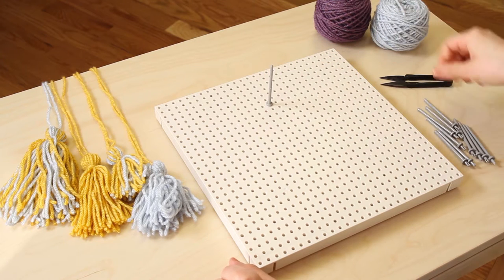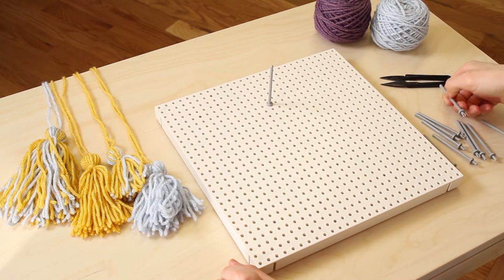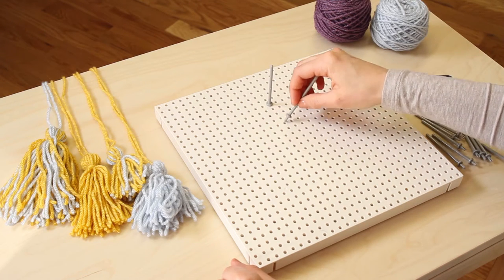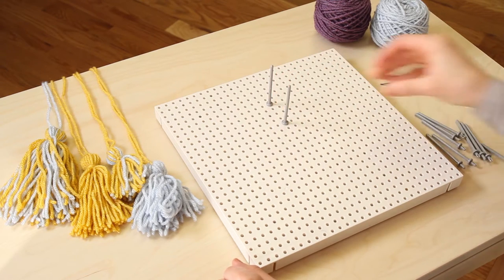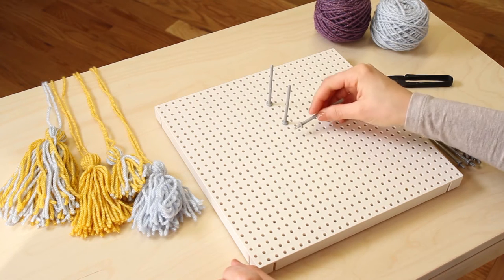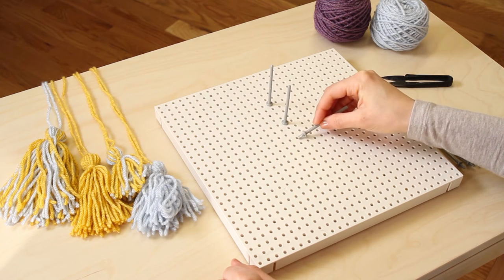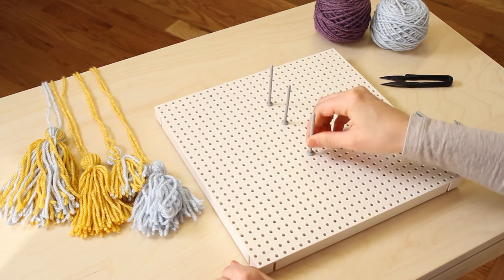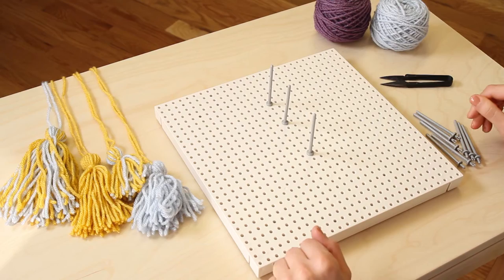Insert one embellishment peg into the loom base for the top of the tassel. The next embellishment peg will mark the center tie of your tassel. The last peg will determine the length of your tassel. The embellishment pegs are much longer than the standard pegs, perfect for making a wide variety of embellishments.